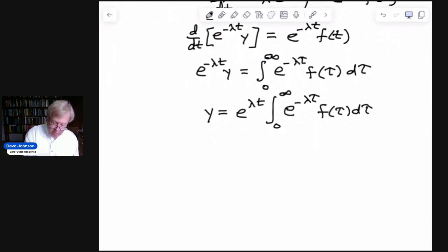And because the variable of integration is τ, we can move the e^(λt) inside the integral. And so I can rewrite this integral from 0 to infinity, combining we get e^(λ(t-τ)) times f(τ) dτ.